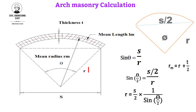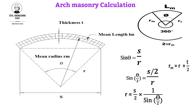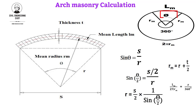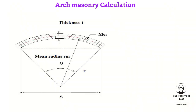Now we need to find the mean radius. The mean radius rm equals the simple radius r plus the thickness of the arch divided by 2. Using the basic arc-length similarity relation in a circle: mean length divided by 2π·rm equals theta divided by 360. Separating the mean length, mean length equals theta multiplied by 2π·rm divided by 360.